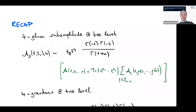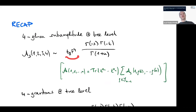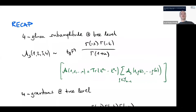We computed last time the particular subamplitude with ordering of points 1, 2, 3, 4 for four points in the superstring using vertex operators. There was a kinematic part — a certain contraction called f to the fourth — capturing the momentum and polarization dependence, which factored out nicely. The remaining integral over the puncture positions led to a quotient of gamma functions, very similar to the Veneziano amplitude for tachyons in the bosonic string.